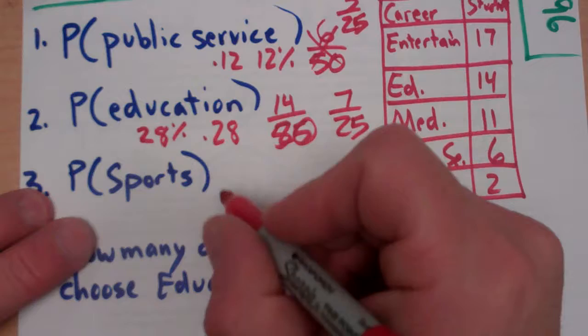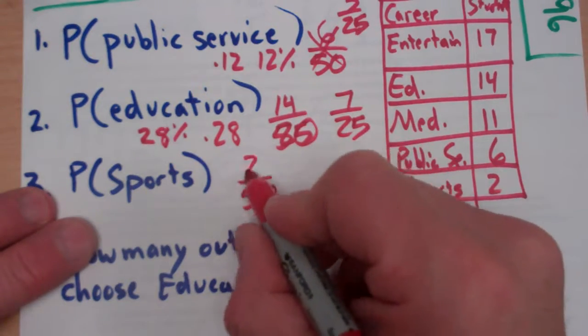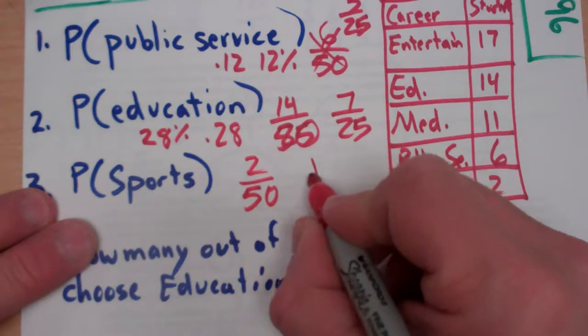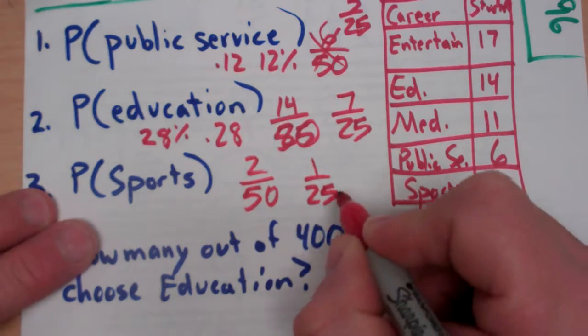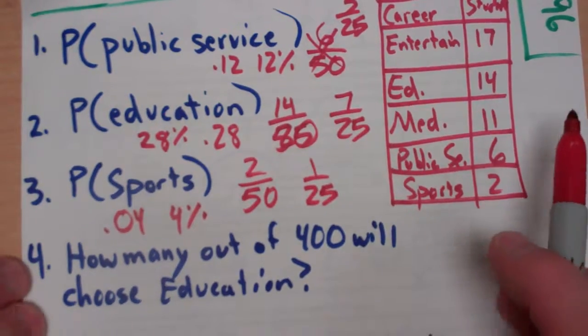Let's go to sports. And I will remember this time that we're out of 50. So, sports is 2 out of 50. It's a probability. So, 1 out of 25, if I simplify that, divide that, you're going to get 0.04, which is 4% probability.